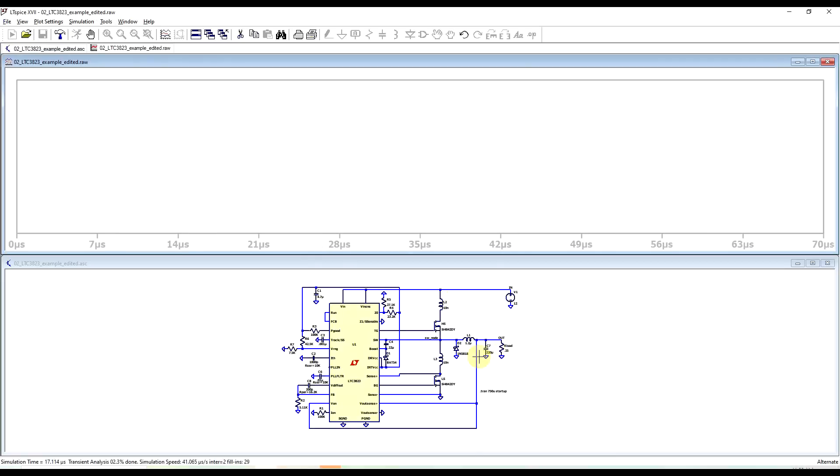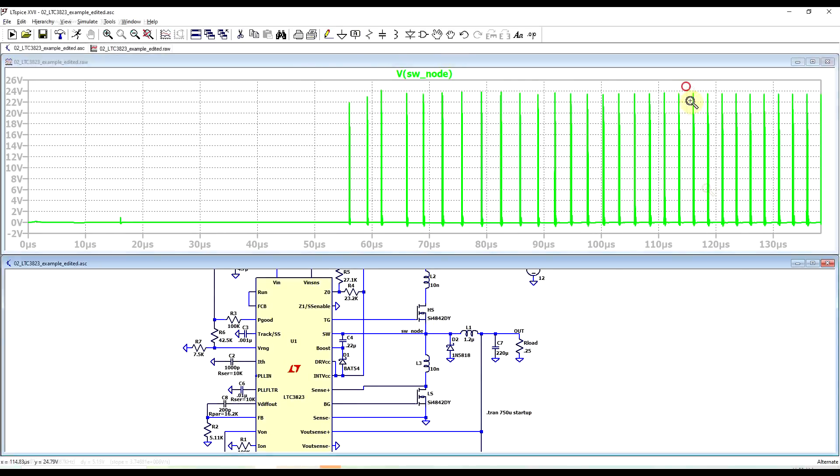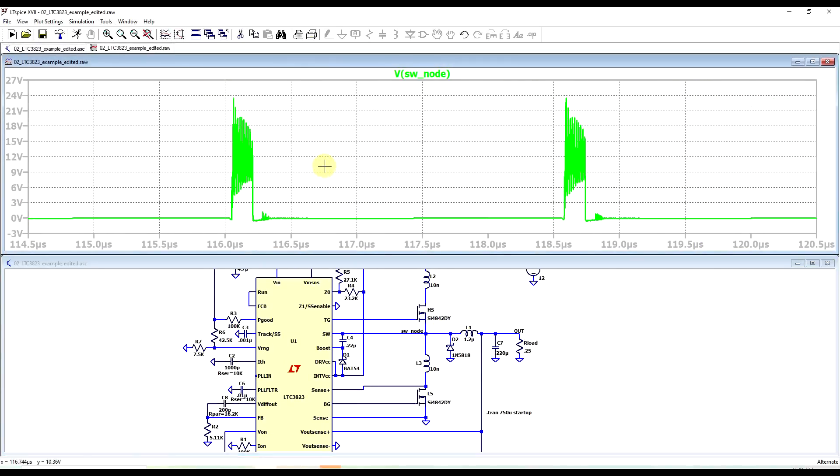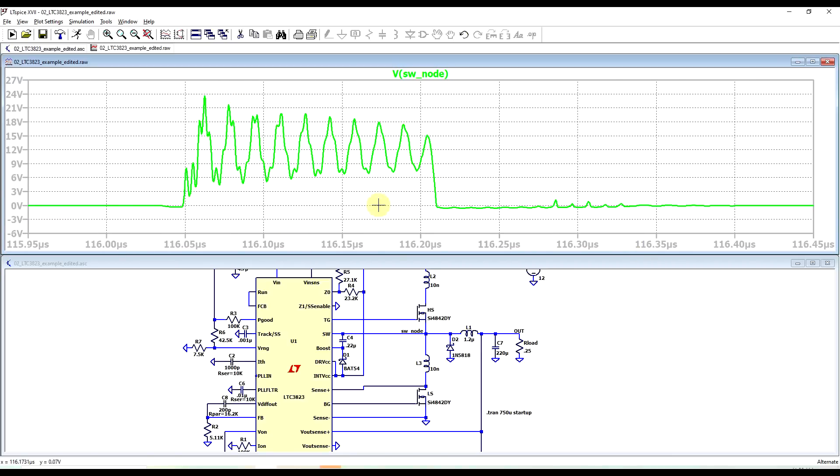And we have a look into the switching node, well the waveform completely changes. So it's the same basic shape, you have your high level somewhere at 12 volts, the low level somewhere at minus something the forward voltage, but then you have this extra oscillation appearing.